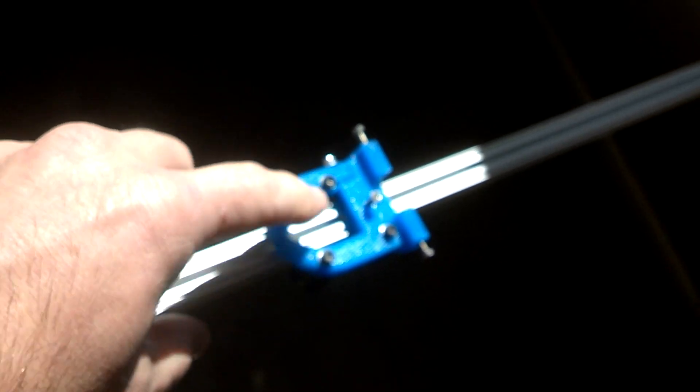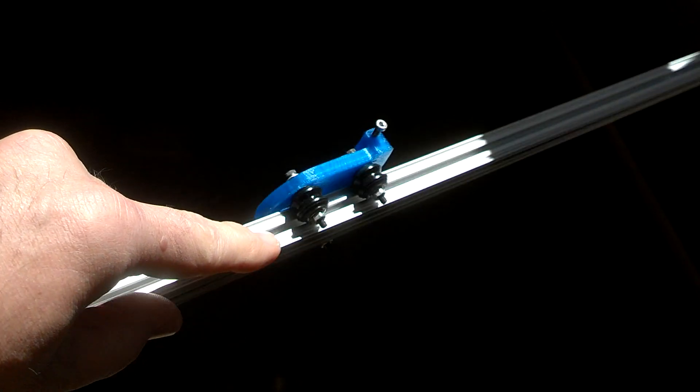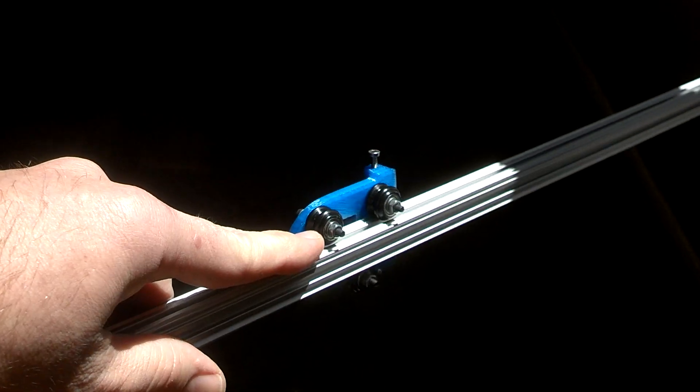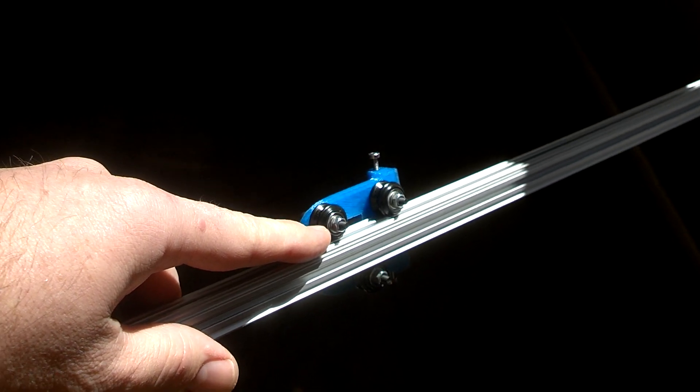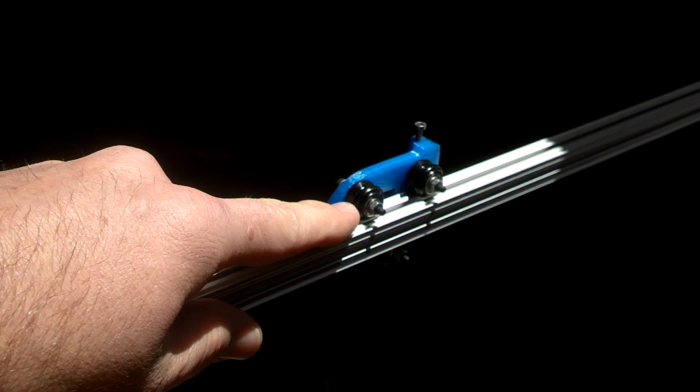And I thought, well, what we should do is make a little carriage that uses my new as yet unreleased dual 623 bearing mini roller or micro roller, as you might say here.